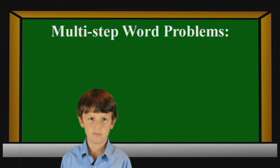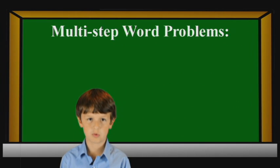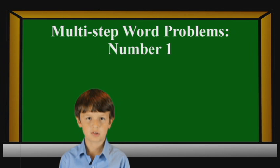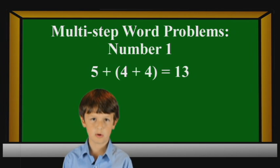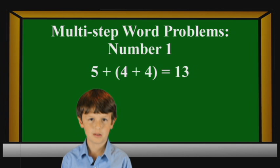The multi-step word problems I used were Number one, John had some toy soldiers. He started with five, Mike gave him four, and Bob also gave him four. How many does he have now?